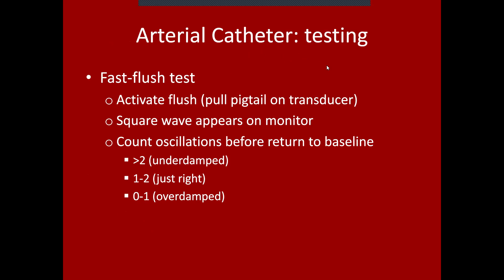In the fast flush test, you activate the flush by pulling the pigtail on the transducer, allowing a burst of pressurized saline through the catheter. You'll see a square wave appear on the monitor, and then you count the oscillations before the waveform returns to baseline. If you see more than two oscillations — both up and down — before return to baseline, we consider that underdamped.